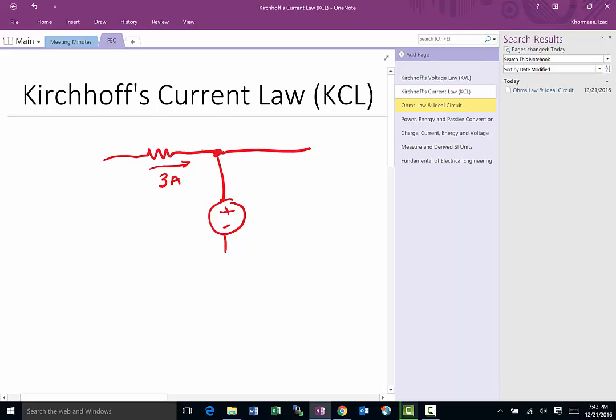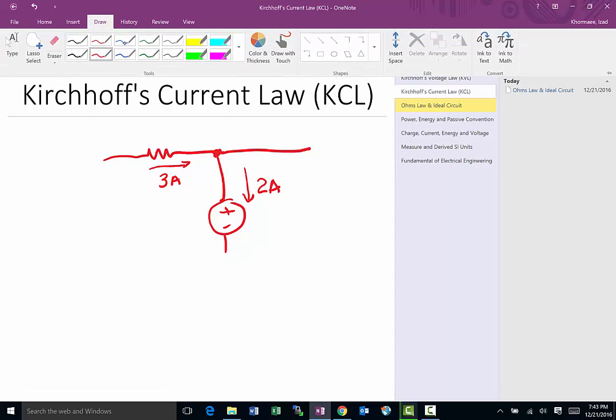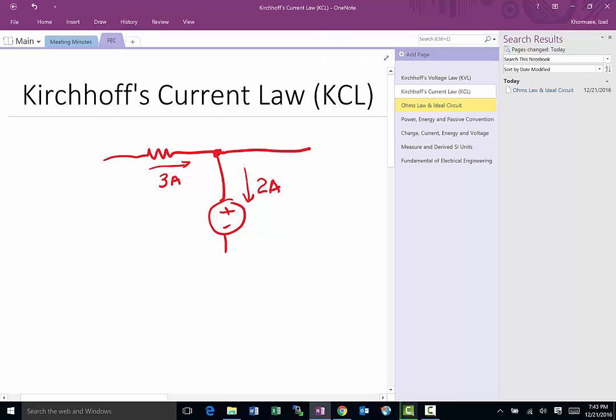Let's say for whatever reason we know that 3 amp is coming in here and we know that 2 amp is going this way. By definition of Kirchhoff's law, since nothing can be stored here, whatever current comes in here it's got to go out of here. Therefore this has to be 1 amp.